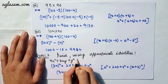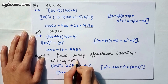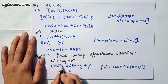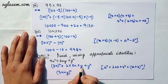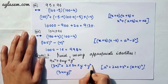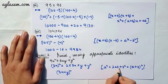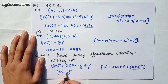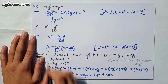Moving to our third question: find the following using appropriate identities. Part 1 says 9x² + 6xy + y². We rewrite it as (3x)² + 2×(3x)×y + y². Using the identity a² + 2ab + b² = (a + b)², the answer is (3x + y)².